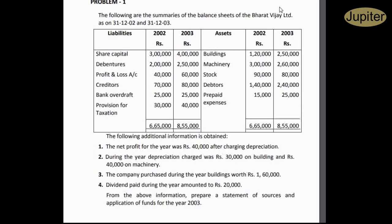The following are the summaries of the balance sheets of Bharat VJ Limited for 31st December 2002 and 31st December 2003. Under liabilities: Share capital is 3 lakhs and 4 lakhs — it had been increased by 1 lakh rupees, so share capital is a source of 1 lakh. Debentures are 2 lakhs and 7 lakhs, an increase of 5 lakhs.